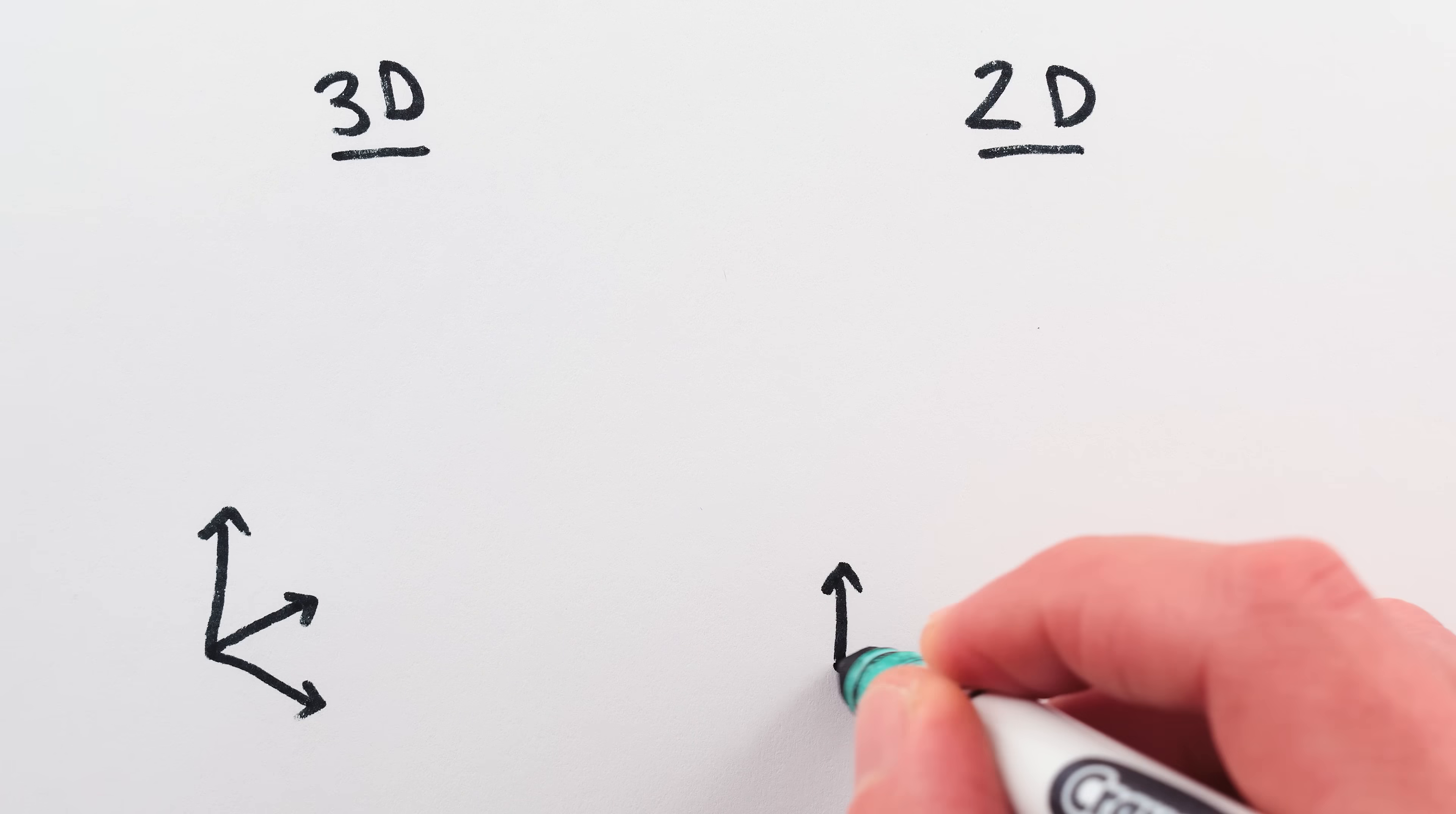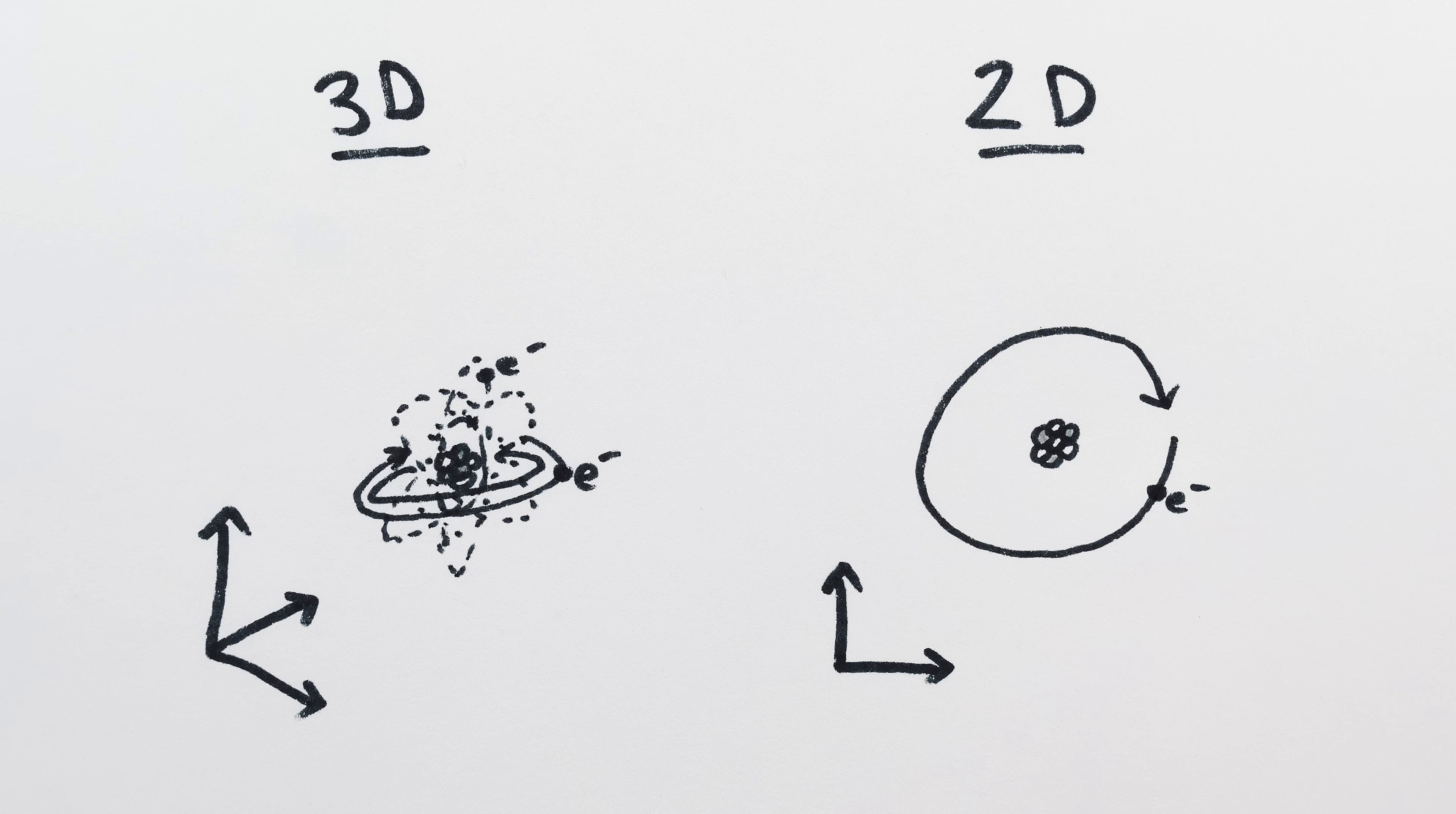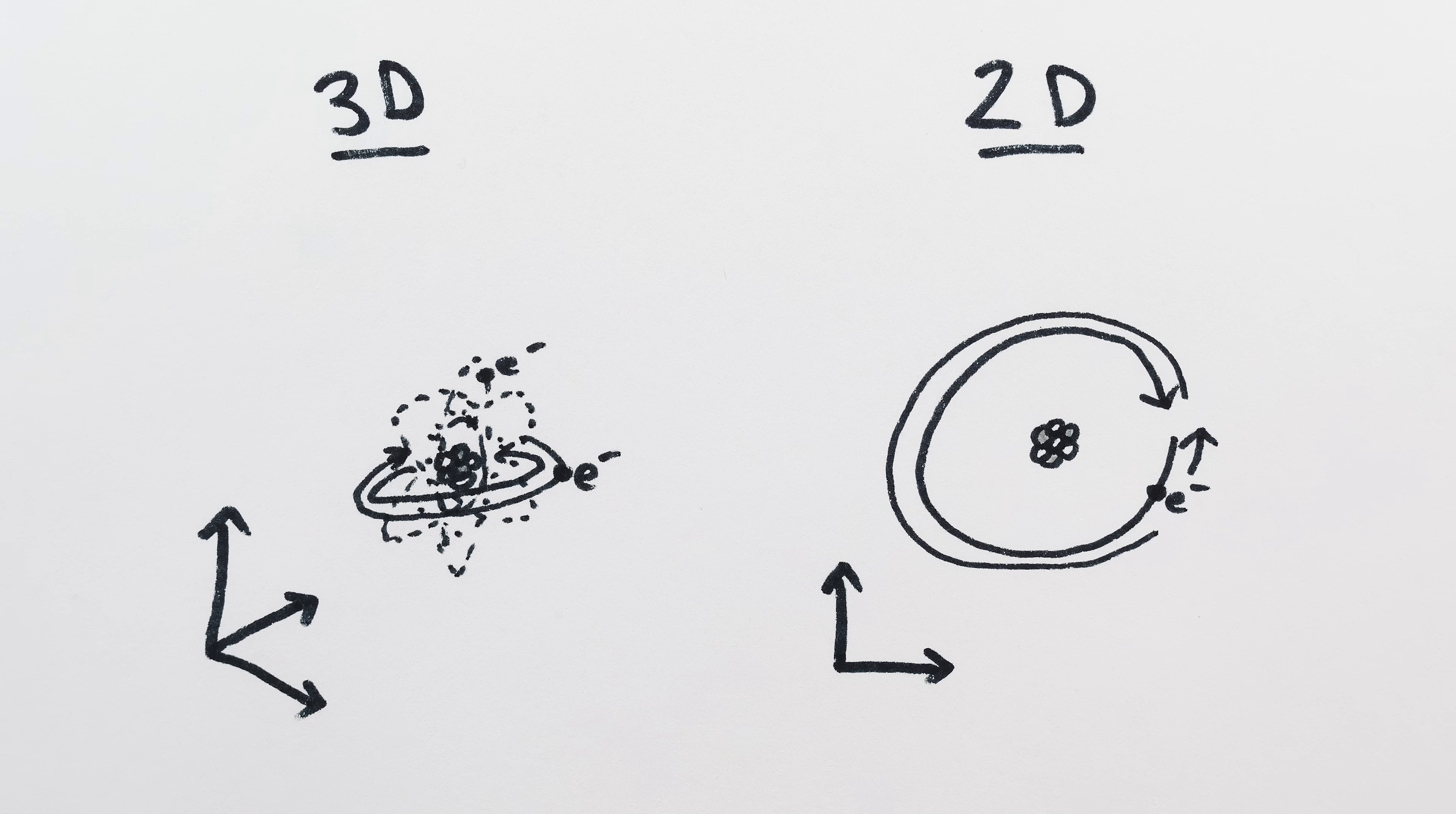And second, because in 2D there are fewer dimensions in which to move, there are also fewer ways for electrons to orbit, which means fewer orbits for each energy level. In particular, for a given amount of angular momentum, an electron can only be orbiting clockwise or counterclockwise, unlike 3D where there are a lot more possible orientations.